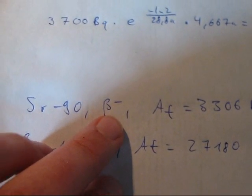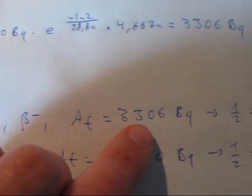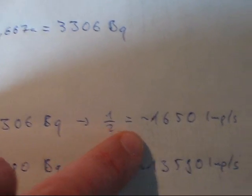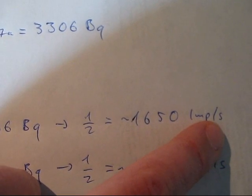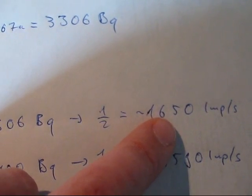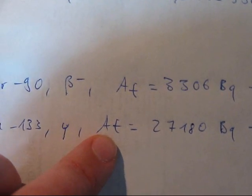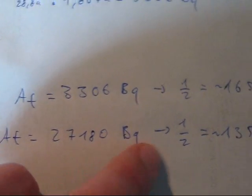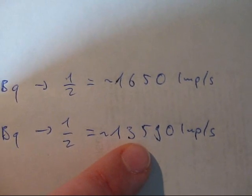For Strontium-90, which is a beta minus or electron emitter, we have a current activity of 3,306 Becquerel. Half of that, which we can estimate to be coming from one side of the source, would be 1,650 impulses per second, probably less than that, maybe around 1,500 or so. And Barium-133, which is a gamma emitter as it decays due to electron capture, has a current activity of 27,180 Becquerel, and half of that is around 13,590 impulses per second to be expected from one side of the source. It will be less than that.